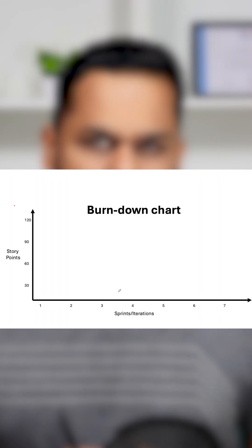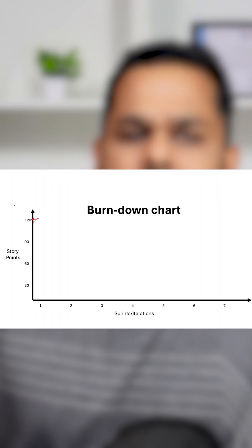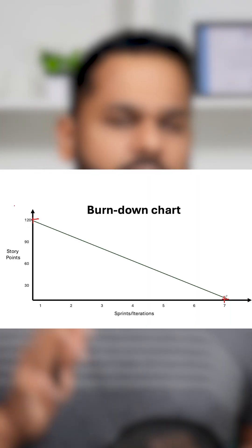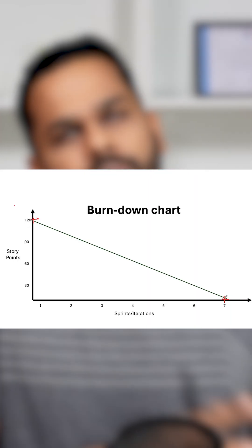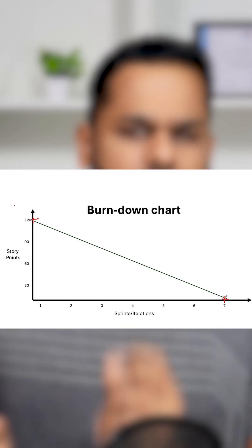When you look at this chart, there are 120 story points to complete, let us say in this particular release, and we have 7 sprints in which we have to complete that. So your plan would show this straight line — we will start with 120 and end up with 0 story points remaining at the end of the 7th sprint. That's what our plan is.